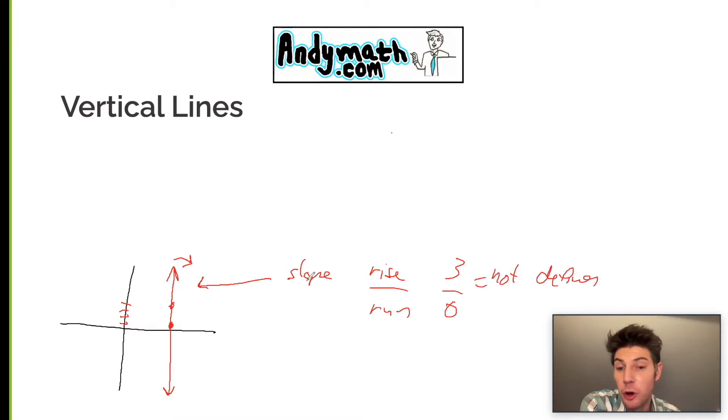So the slope then is not defined. This line doesn't have a slope. We usually like to write lines as y equals mx plus b, but we can't write this as y equals mx plus b because m is not defined.